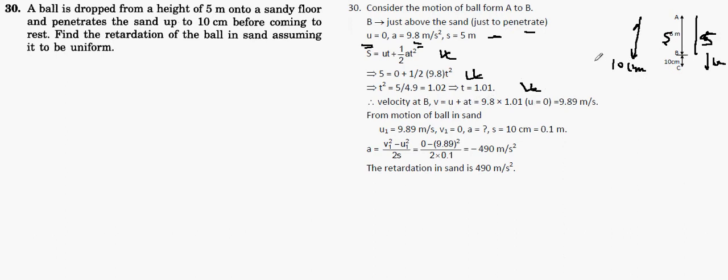Now the velocity at B. We can find using the formula v = u + at. Initial velocity is 0, we have the time 1.01, so we have the velocity at point B just before hitting or just before penetrating the sand surface.